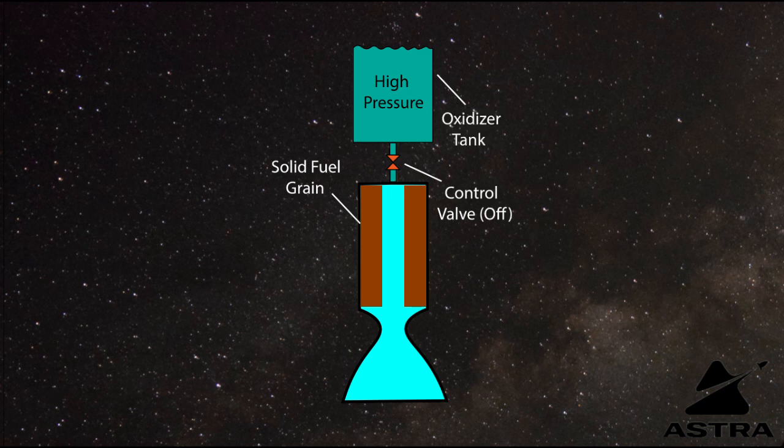In this way, it's kind of combining the two different parameters of a solid and a liquid rocket. Similar to a solid rocket, the solid fuel is compacted into a fuel grain that's placed inside of the combustion chamber.